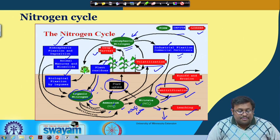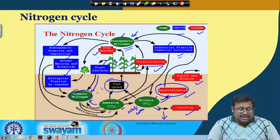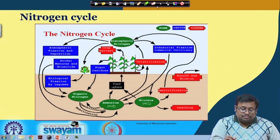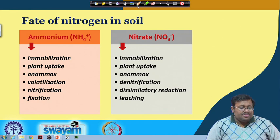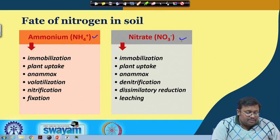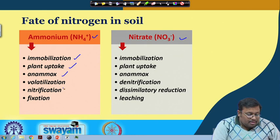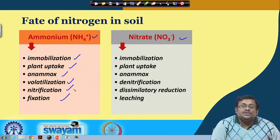This is a snapshot of the nitrogen cycle — the cycle is more complex, but you can get a basic idea about the different processes. What are the different fates of nitrogen in the soil? Ammonium can undergo: immobilization (conversion to organic form), plant uptake by rice plants, anammox (discussed later), volatilization (conversion of ammonium to ammonia gas), nitrification (conversion of ammonium to nitrate), and fixation — several clay minerals fix ammonium ions.